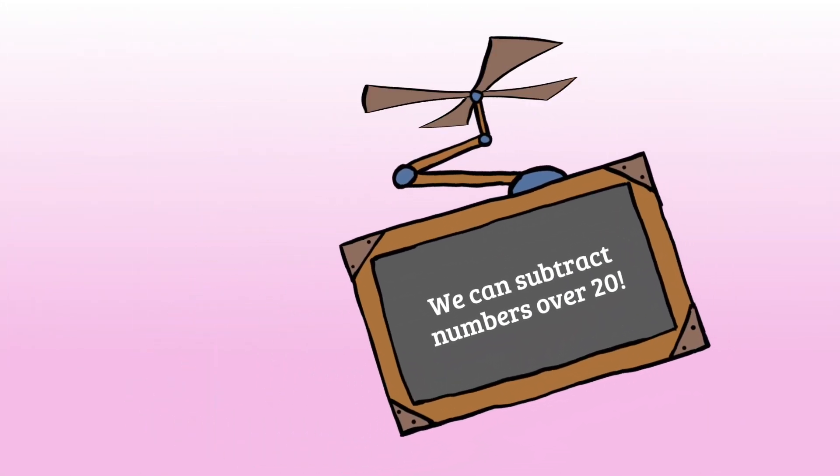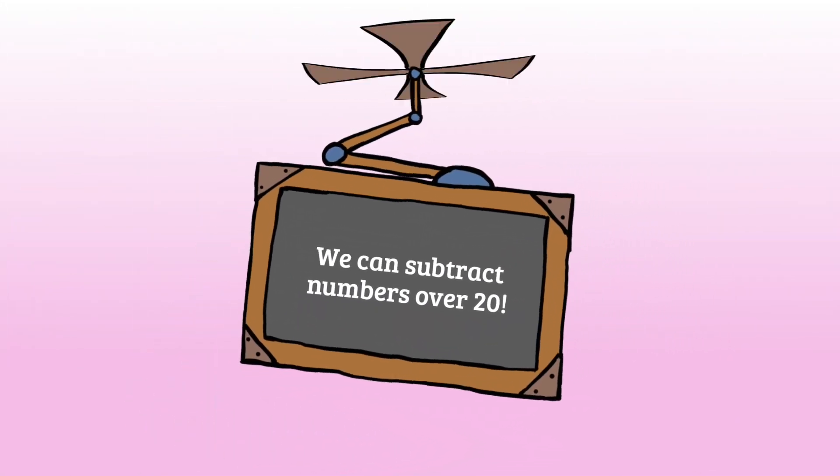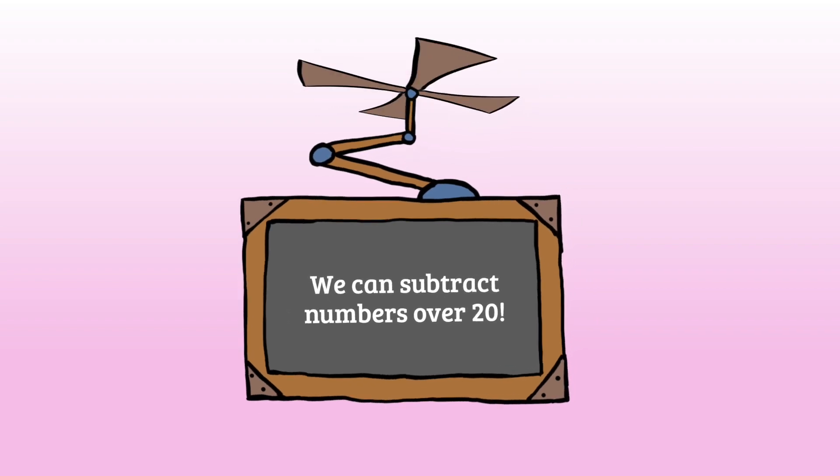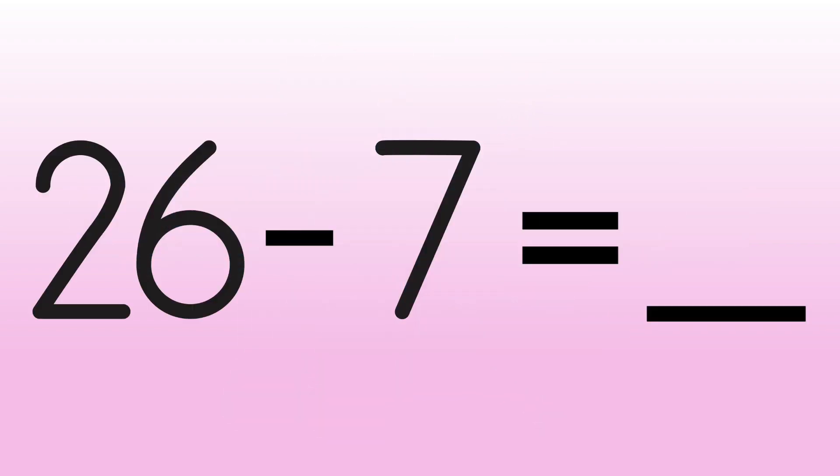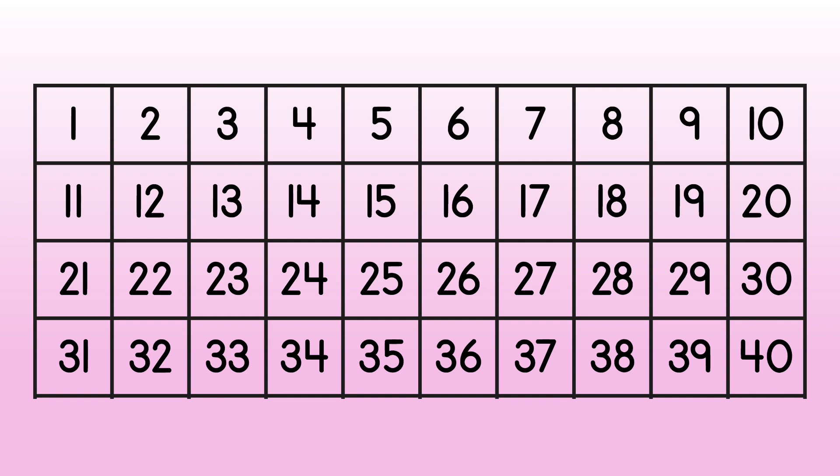Using a hundreds chart, we can also subtract numbers greater than 20. Let's try another number sentence. 26 minus 7 equals blank. Let's use our first method of solving. Find 26 on the hundreds chart. Now, count back 7.